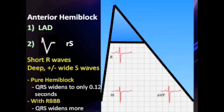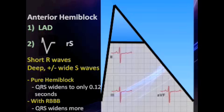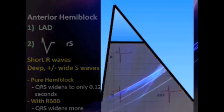So anterior hemi blocks: number one, you must have left axis deviation. And number two, you're going to have little R, deep S waves in leads 2, 3, and AVF.